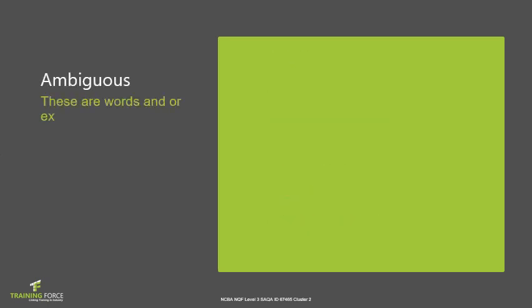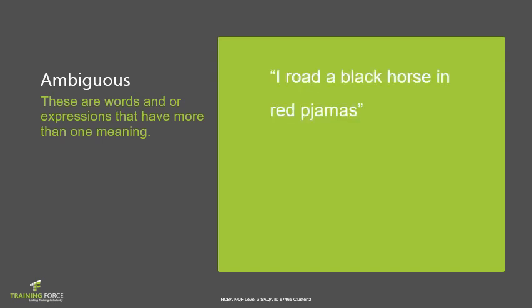Ambiguity means double meaning — words or expressions that have more than one meaning. For example: 'I rode a black horse in red pajamas.' Did you ride the horse in red pajamas, or was the horse wearing red pajamas? Another example: 'Did you see him in the office?' — do we mean the office block or his specific office? So make sure that you use your words correctly so as not to create a different meaning.